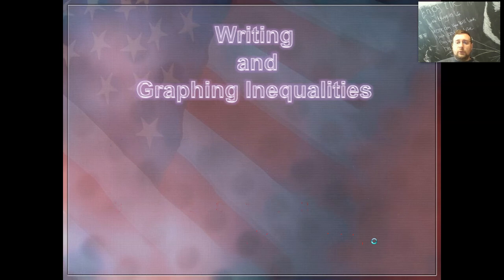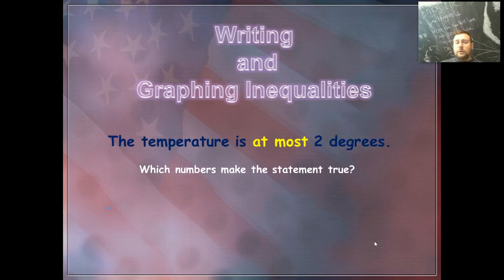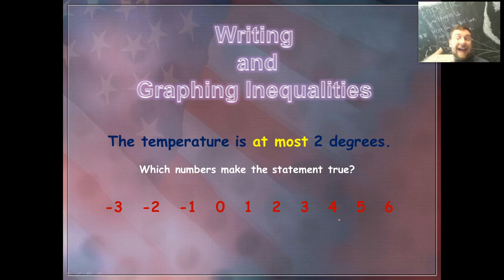So let's look at another example of that. If you have the temperature is at most two degrees, so which statement is true? At most two, that means that three would be too much. Two would be okay because it's at most two, so two is included, and all the numbers below that would work as well. So in this example, all of the numbers to the left here would actually work.